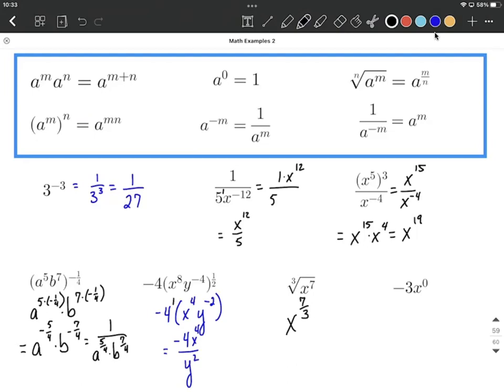And the very last one here, negative 3 x to the 0 power. Now it's important to note that 0 power is only attached to the x. The negative 3 has its own exponent of a 1 right now. So as we want to simplify this down, anything raised to the 0 power is equal to 1.